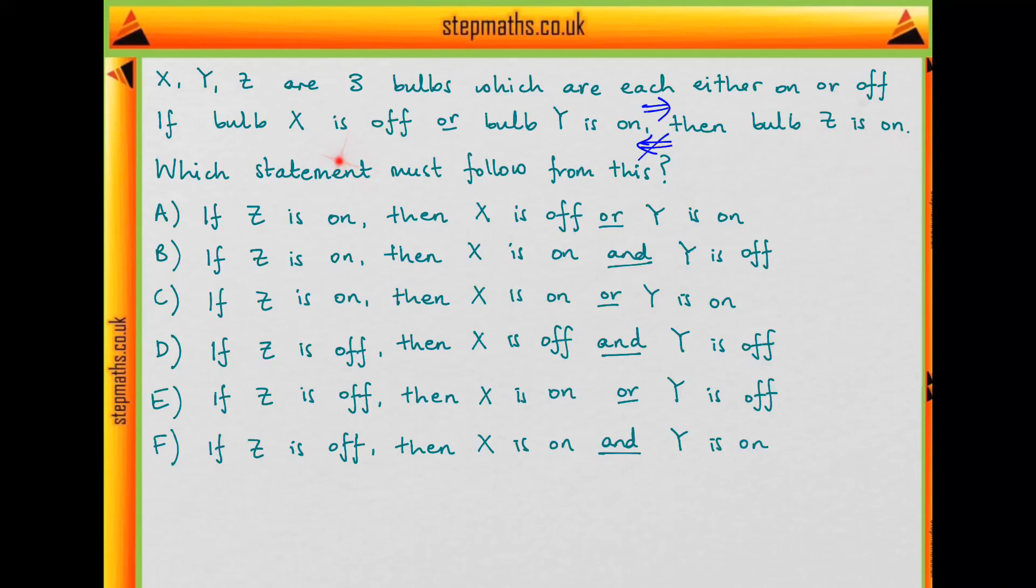Because if Z is on, we could have X being off or Y is on, but there could be some other situation which allows bulb Z to be switched on. So just the fact that this bulb is on doesn't tell us anything about the other two bulbs.